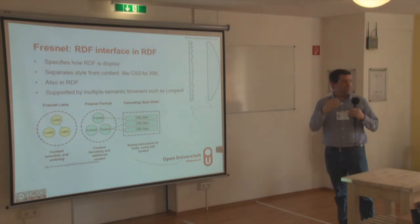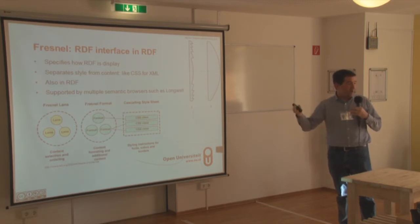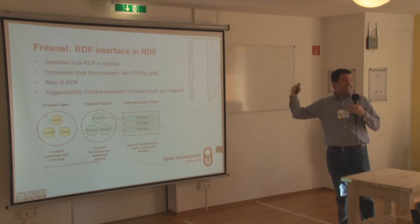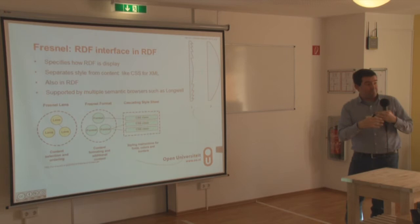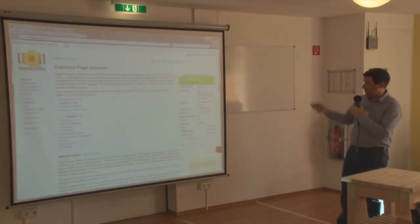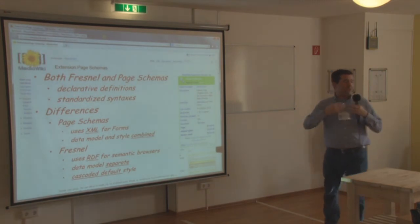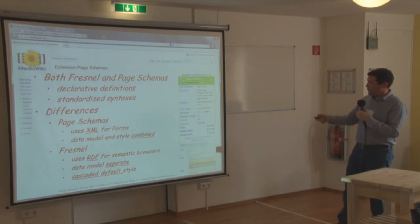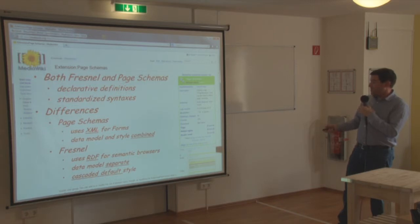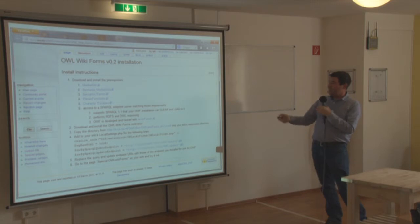A problem is that Fresnel doesn't intentionally do cascading — it does have conflict resolution, and I misuse that a bit to emulate cascading. What I'd like to do is extend the Fresnel ontology with extras that help Fresnel work in the context of Semantic Forms and Semantic MediaWiki. Page Schemas takes a very similar approach. One difference is that Page Schemas does not handle the data as something separate. Both Fresnel and Page Schemas have declarative, standardized syntaxes — the difference is XML versus RDF. Also in Page Schemas, the data model and style are combined, while Fresnel keeps them separate. You can download it; the URI is on the slides.